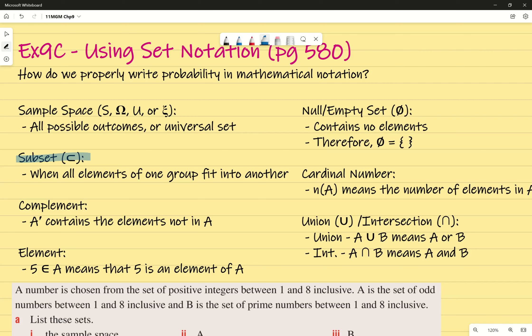Complement, we talked about that one already, which is just represented by the dash. So A dash means what's not in A. And element, as I mentioned. Now this one is a weird-looking symbol, but that sideways, weird-curved-looking E just means an element of. So if I said five is an element of A, that just means that in group A, there is a five. Gone through four definitions. Any questions so far?